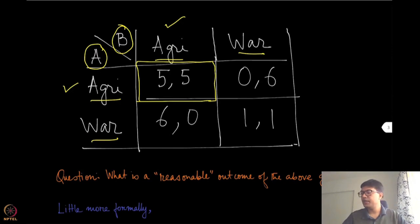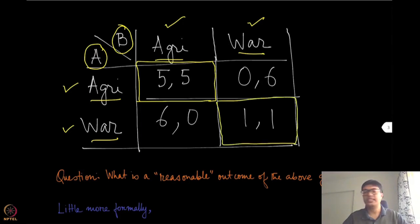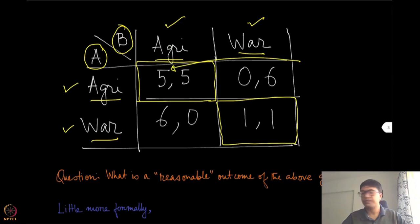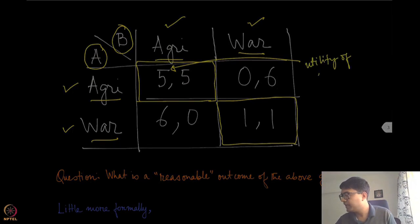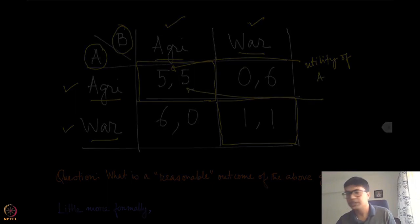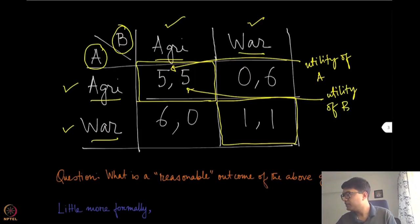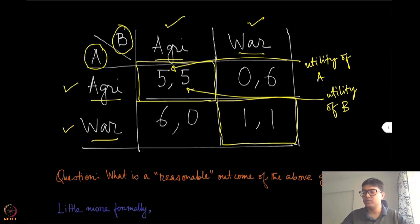Now if both kingdoms choose war, there won't be any agricultural produce because they have not invested anything on agriculture. Just to give you the context: in each of these boxes we are putting two numbers — the first number represents the utility or payoff of the first player, player A, and the second number represents the utility of the second player, player B.